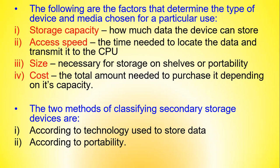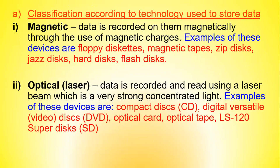The two methods of classifying secondary storage devices are according to technology used to store data and according to portability. When classifying by technology, we have magnetic storage media and optical storage media. Magnetic storage devices record data magnetically using magnetic charges and include floppy diskettes, magnetic tapes, zip disks, Jaz disks, hard disks, and flash disks. Optical devices record and read data using a laser beam — a very strong concentrated light — and include compact disks, DVDs, optical cards, optical tape, and LS120 super disks.